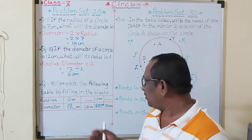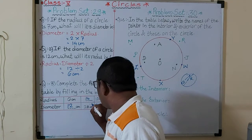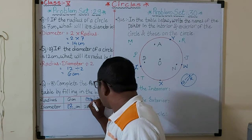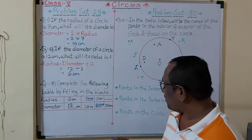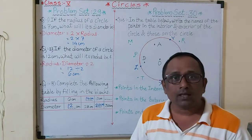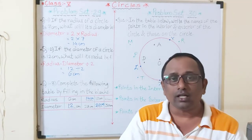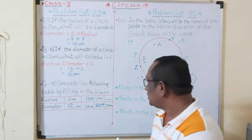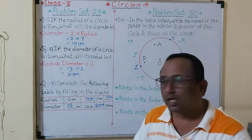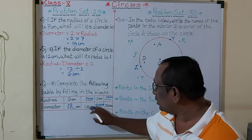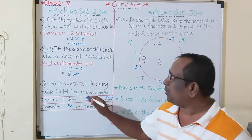Half of 28 is 14 — so radius is 14. Now for diameter 30: half of 30 is 15 centimeters. So radius is 15. I hope you understood this simple thing. Keep this formula in mind. Now we'll move to problem set number 30.